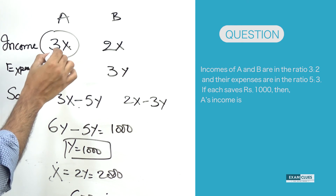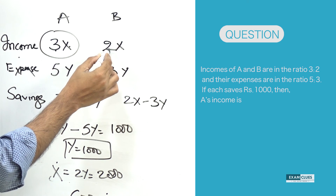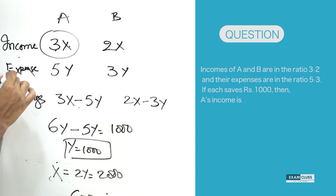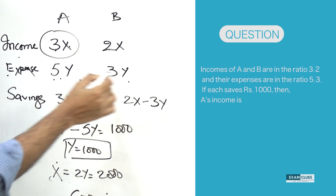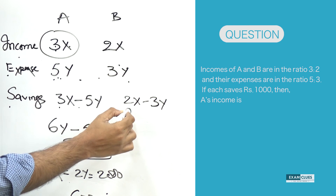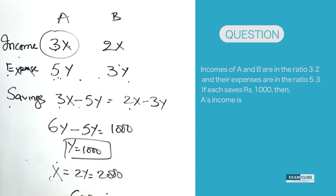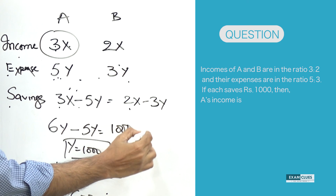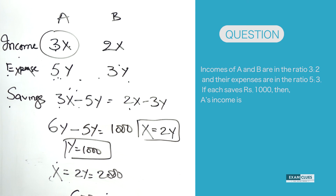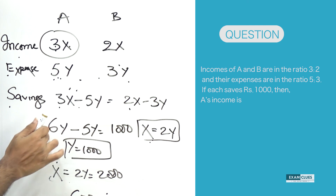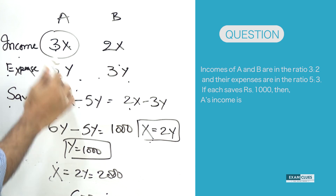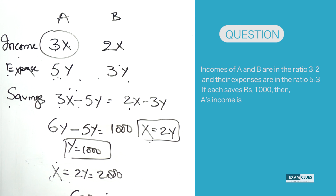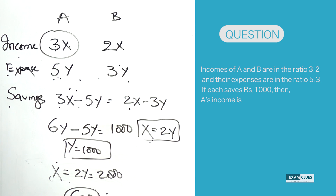To recap: we took income as 3x and 2x to satisfy the 3:2 ratio, and expenses as 5y and 3y for the 5:3 ratio. Savings are 3x minus 5y and 2x minus 3y. Since these are equal and amount to 1000 rupees, we found x = 2y. Substituting back, 6y minus 5y = 1000, so y = 1000, x = 2000, and A's income is 3x = 6000 rupees. A pretty interesting question!